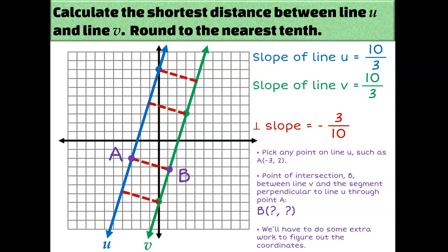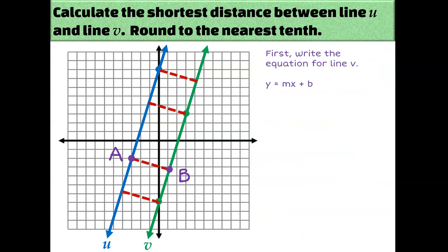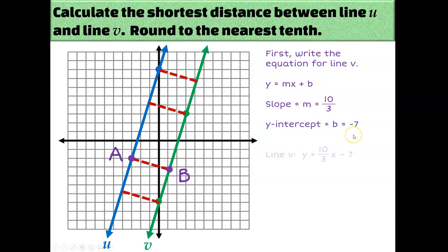The first thing we need to do is write an equation for line V in slope-intercept form, Y = MX + B. M was 10 thirds — we had already counted that. And the lowercase b in Y = MX + B is for the Y-intercept, which is down here at negative 7. So the equation for line V is Y = (10/3)X − 7.